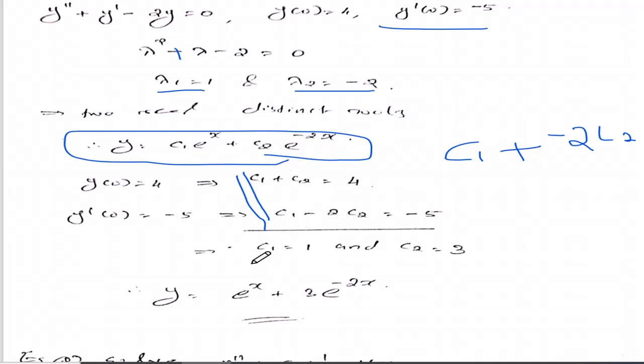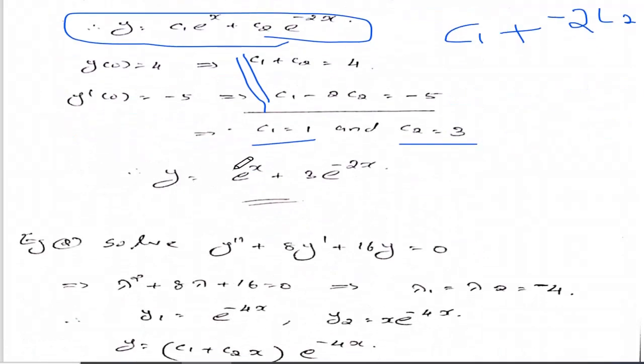Solving this system gives c1 equal to 1 and c2 equal to 3. Therefore the particular solution is y equal to e raised to x plus 3 e raised to minus 2x.